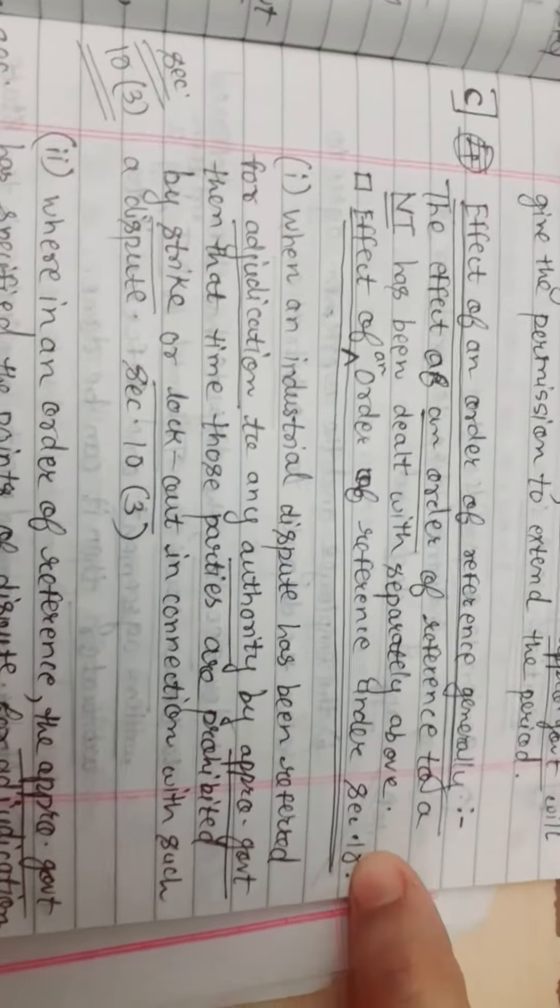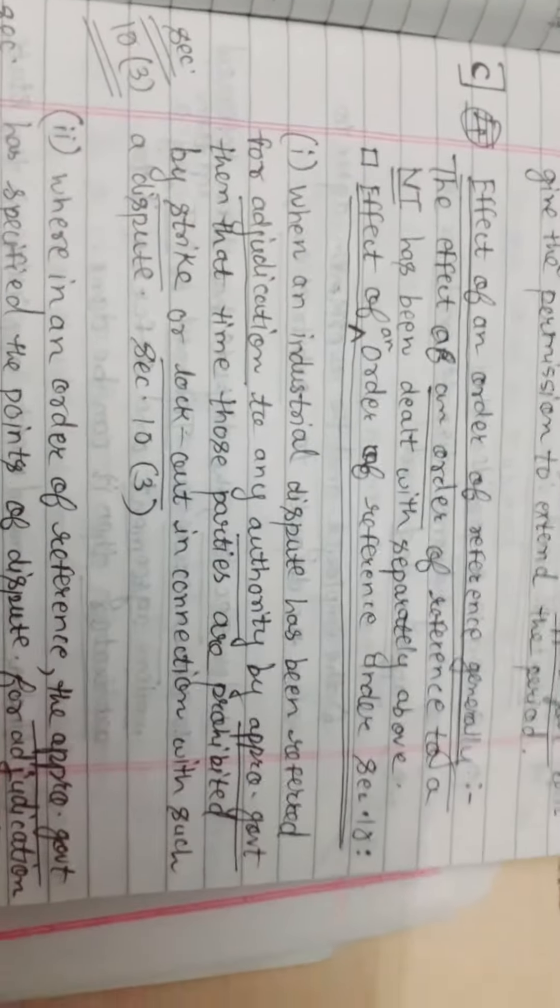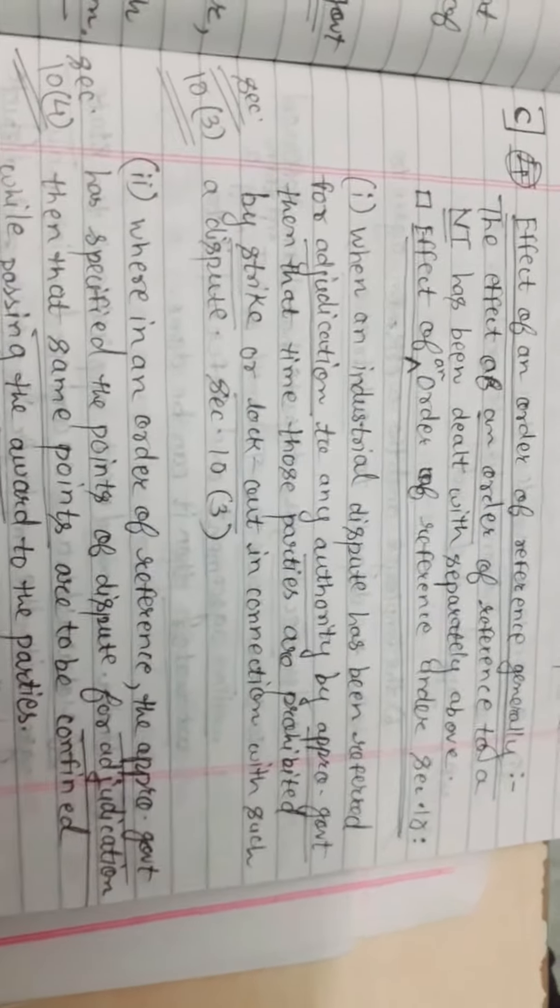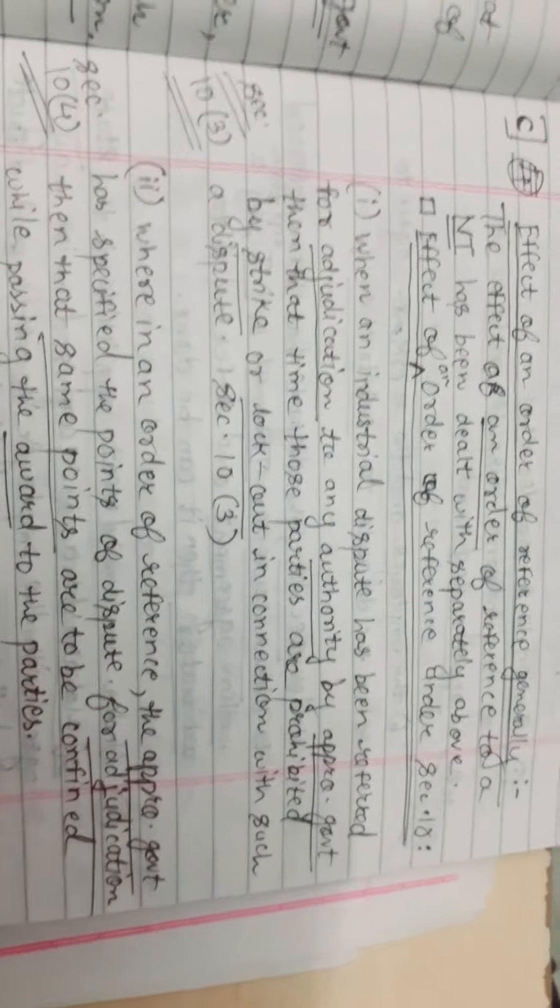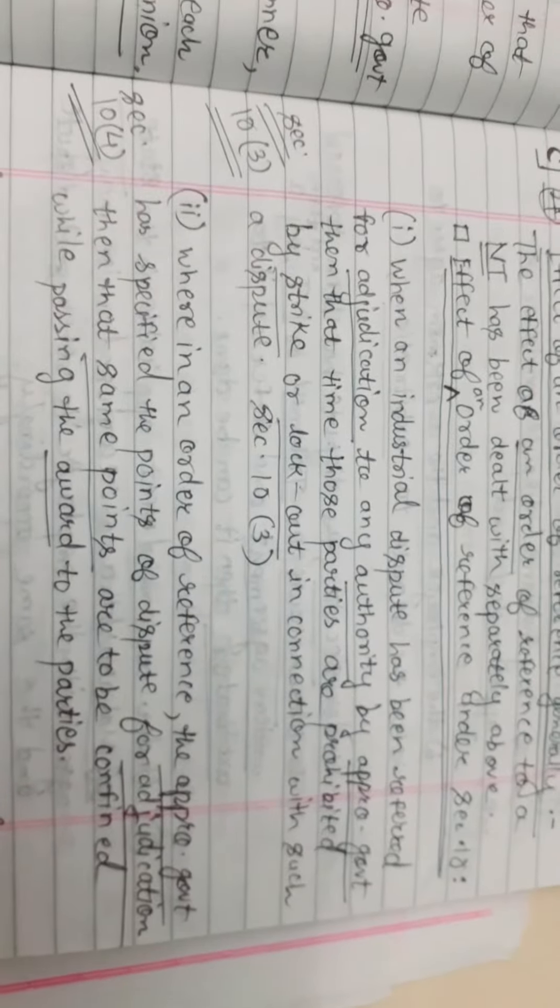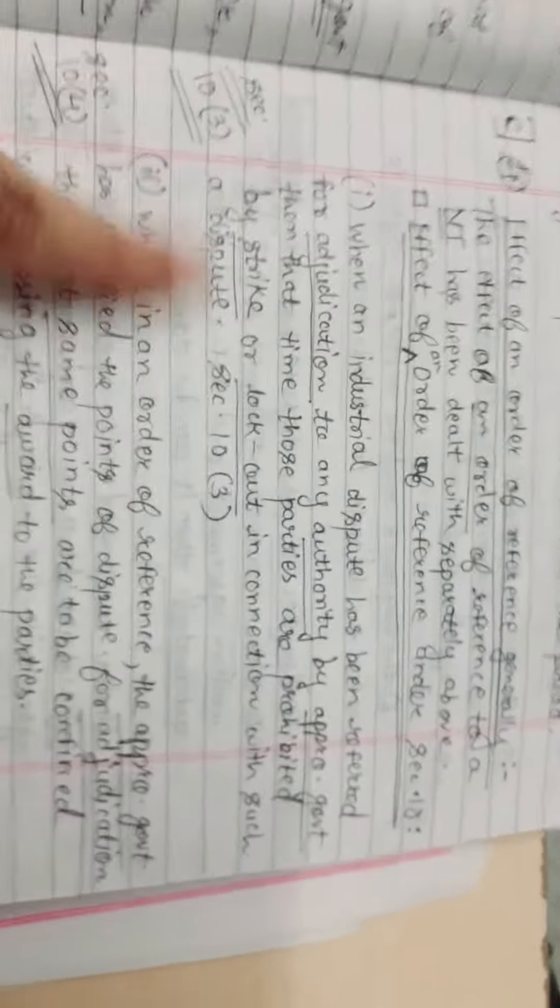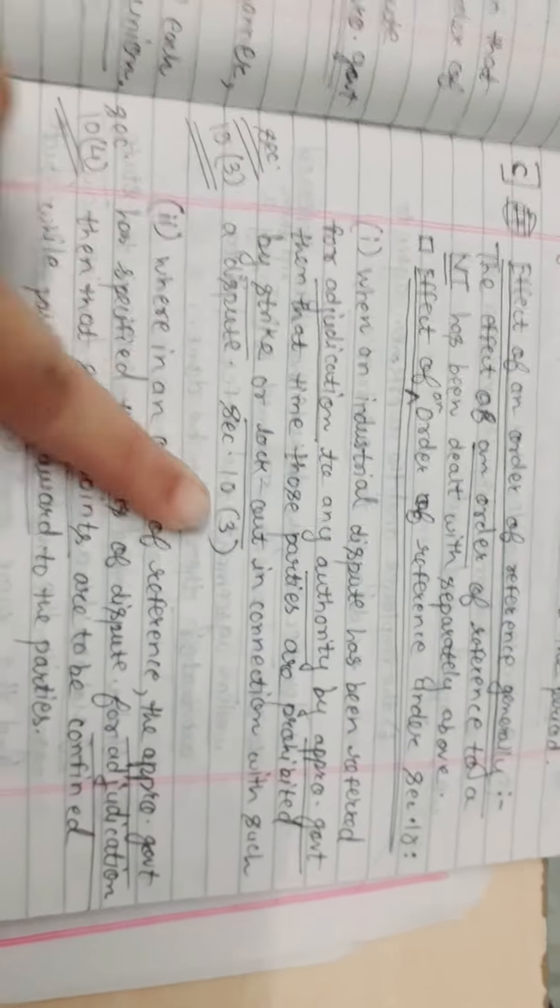In Section 10, effect of an order of a reference under Section 10: when an individual dispute has been referred for adjudication to any authority by appropriate government, then those parties are prohibited from strike or lockout in connection with such dispute. It is according to Section 10 Clause 3.